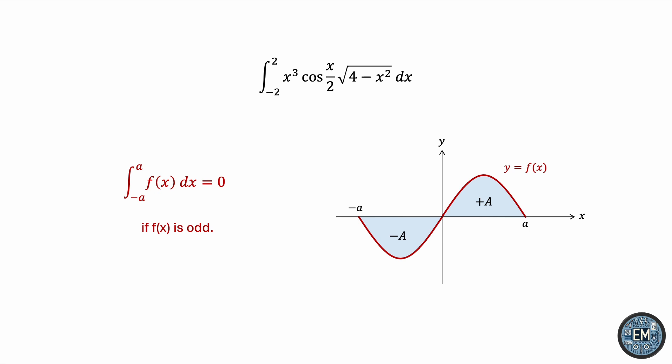So if the integrand we have is an odd function, then we don't even need to find the antiderivative, the integral will just vanish. Okay, so how can we check if the integrand is odd? An odd function satisfies the equation f of negative x is equal to negative f of x. So let's see if our integrand function passes this test.